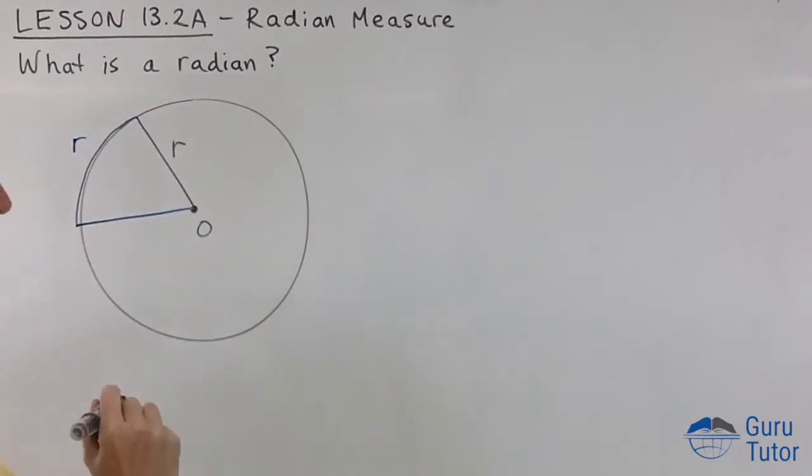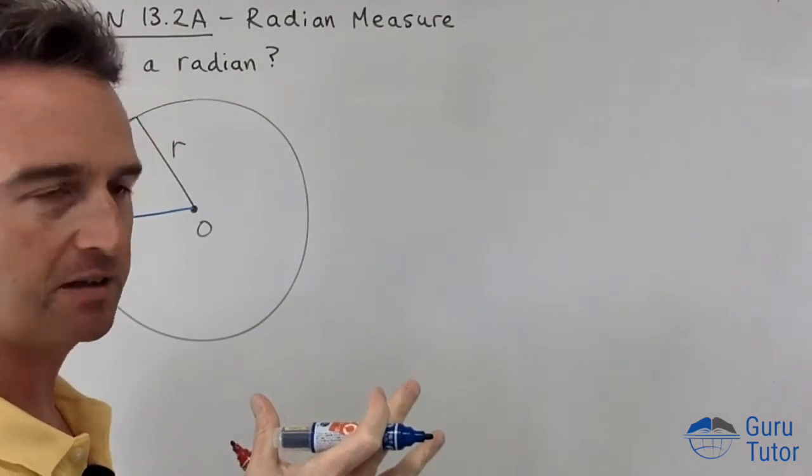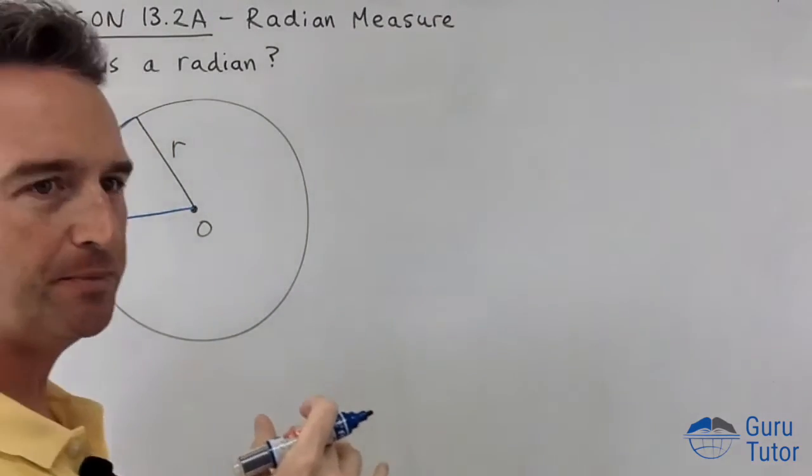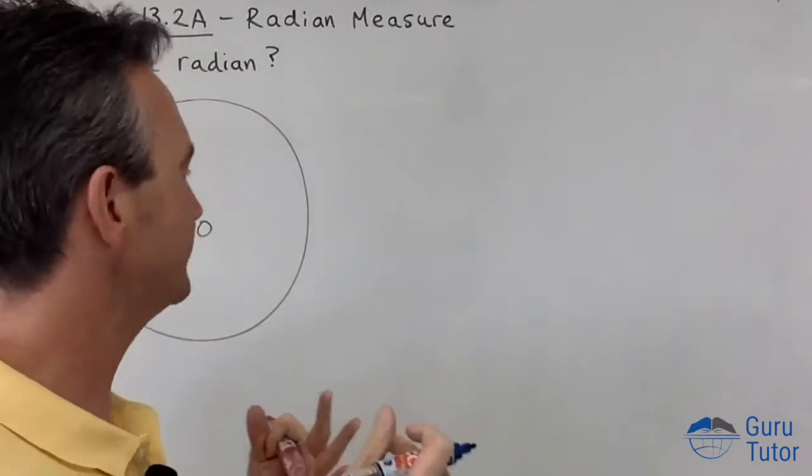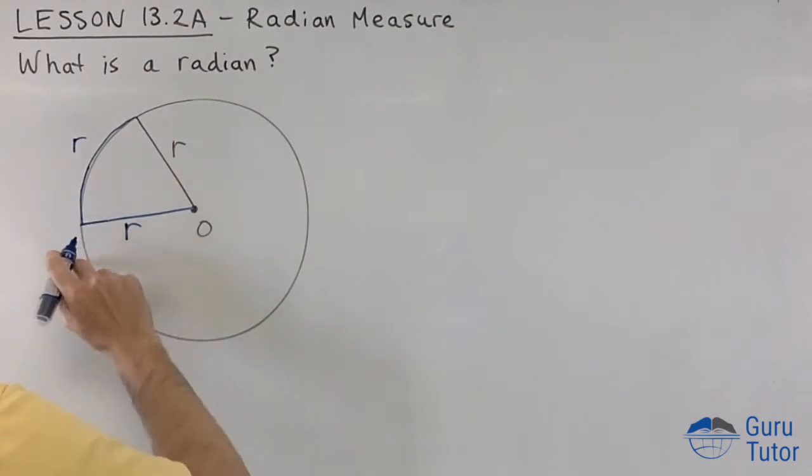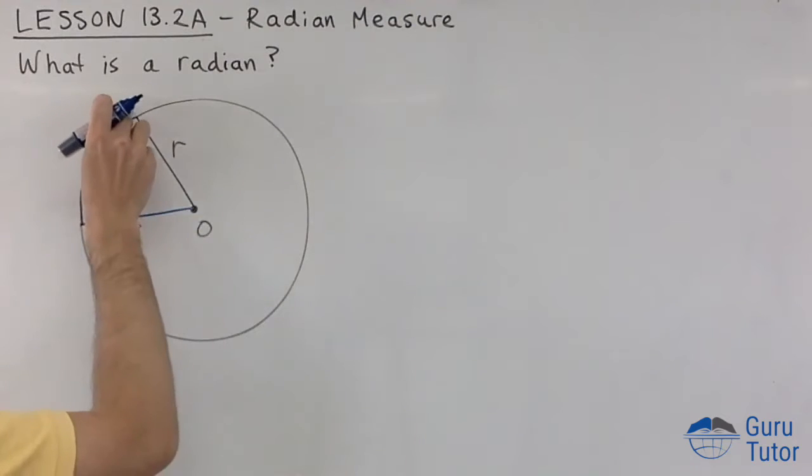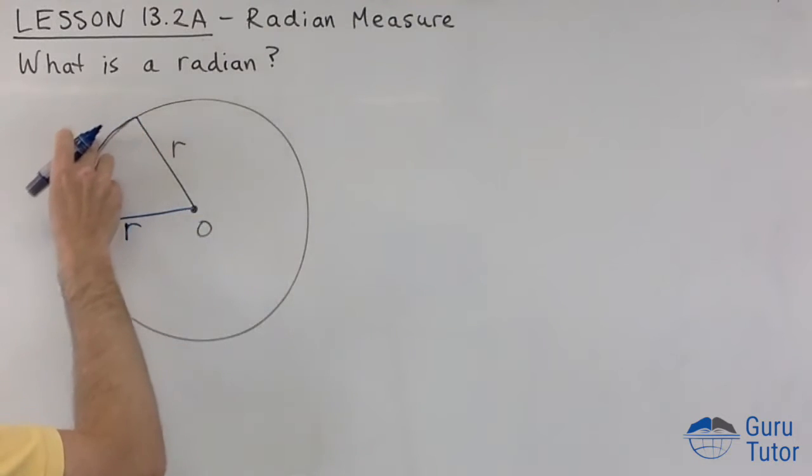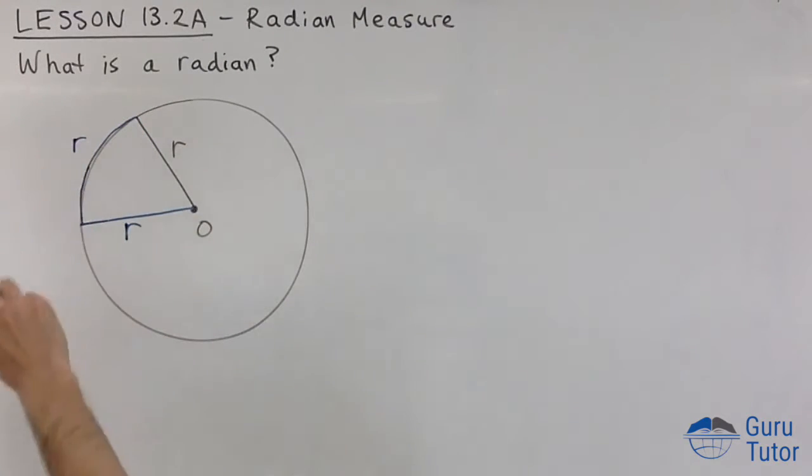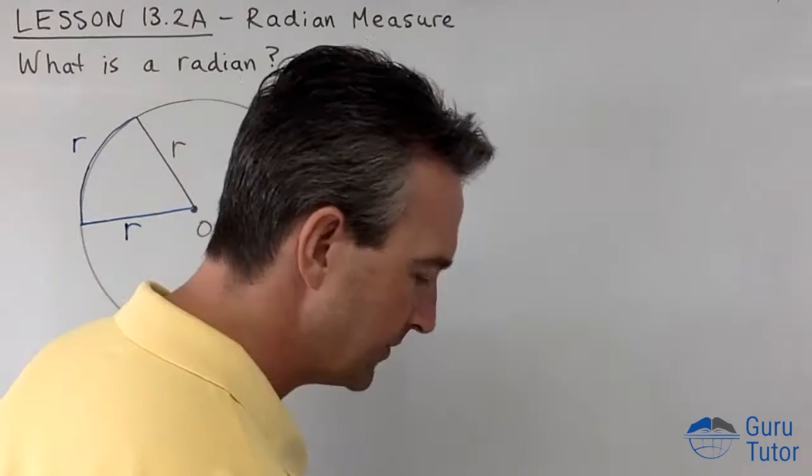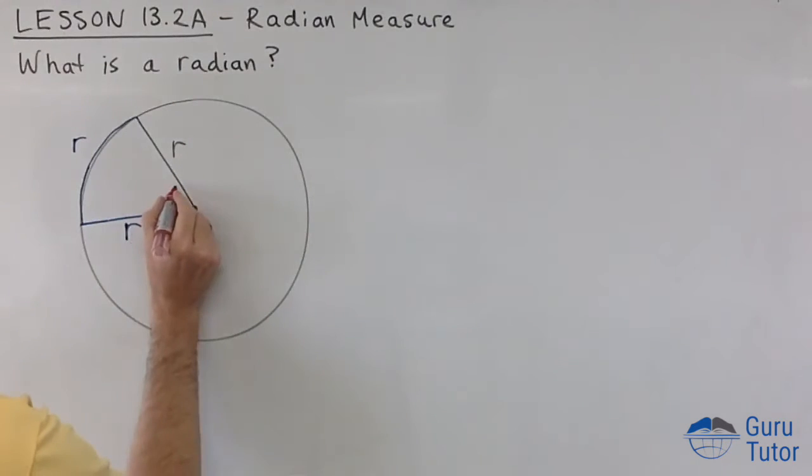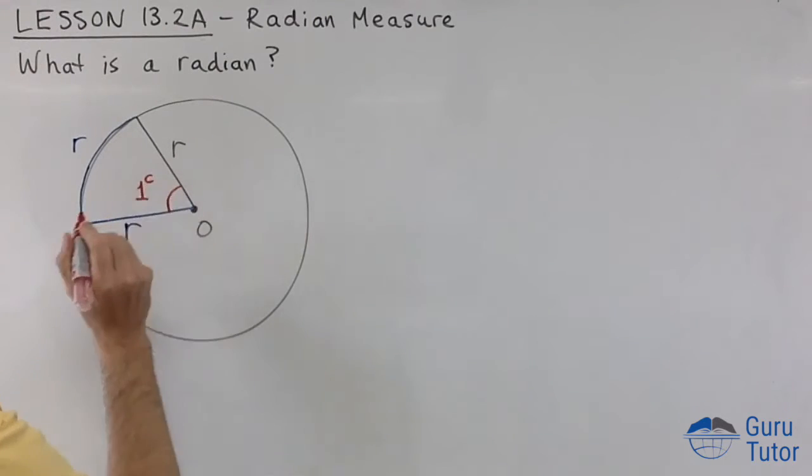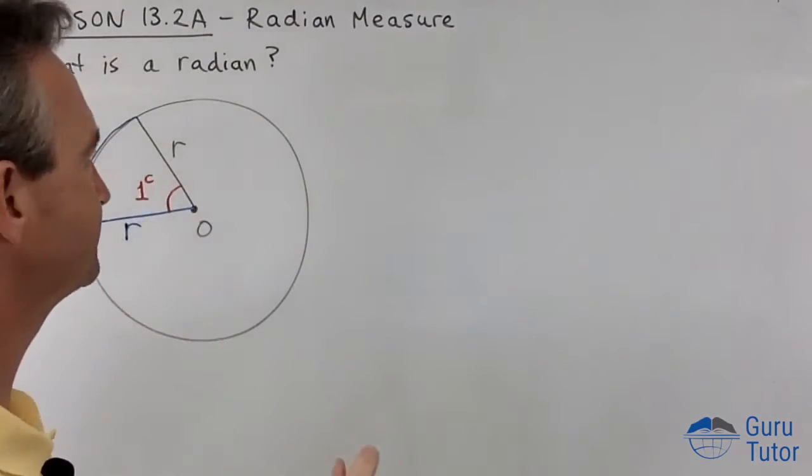Then we're going to connect that up and close that up. Now that's the shape of a slice of pizza, right? Do you remember what that shape is called? It's actually called a sector. We have a sector with a radius and a radius, and that length along the circumference or the arc length there is also radius r. And that defines this angle here—and this is one radian.